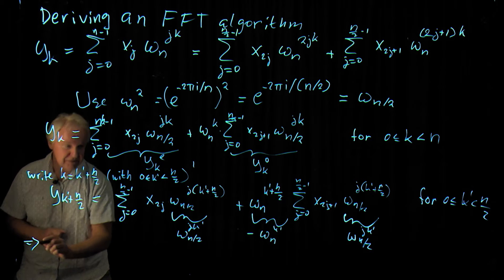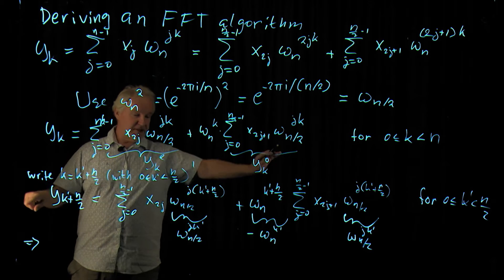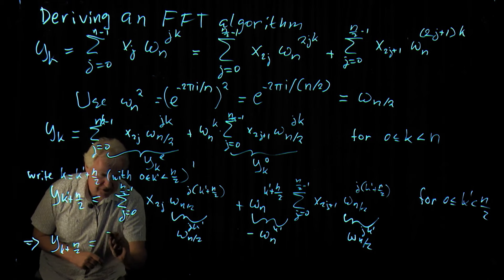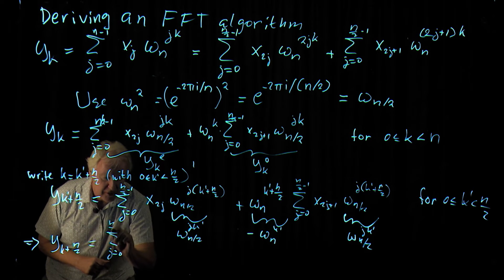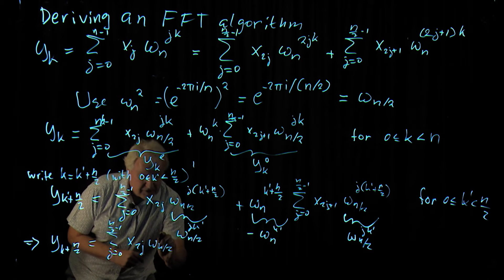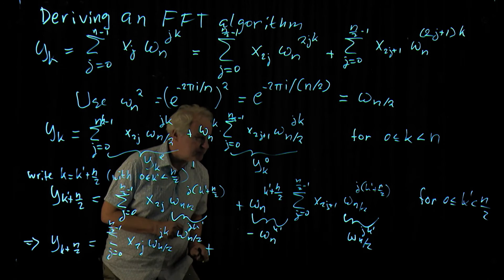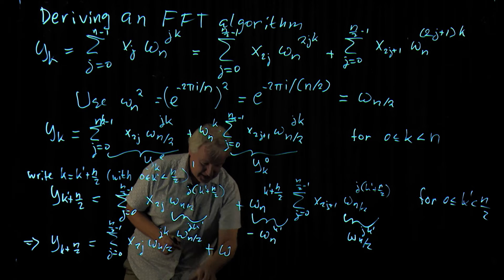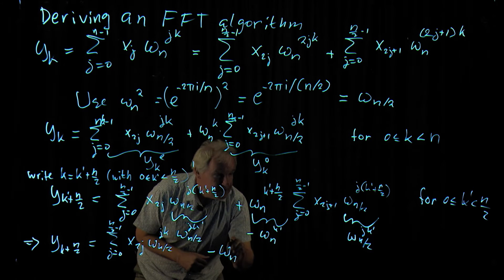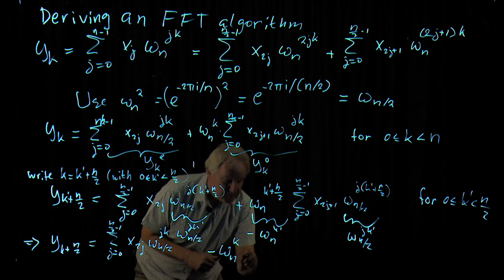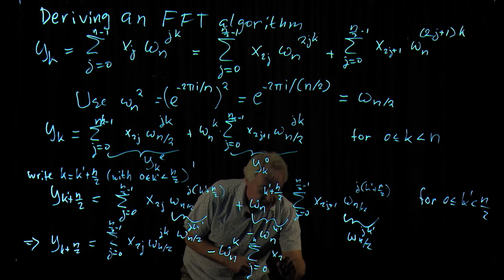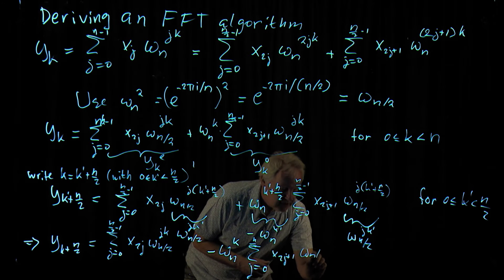And then the conclusion is that we can drop the primes. If we drop it everywhere, then we write y_{k+n/2} equals the sum j equals 0 to n/2 minus 1, x_{2j} omega_{n/2} to the power jk minus omega_n to the power k times the sum x_{2j+1} omega_{n/2} to the power jk.